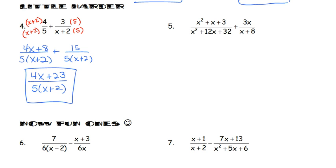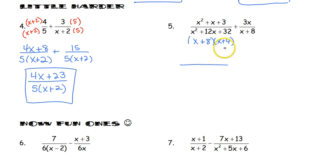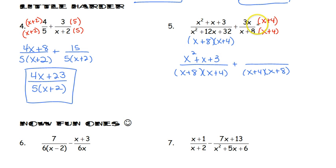For number 5, this one may look really hard, but keep the numerators and denominators factored. We want to factor the bottom of the second fraction to see if it shares a common factor with the first. Two numbers that multiply to 32 and add to 12 are 8 and 4, giving us (x plus 8)(x plus 4). The first denominator already has x plus 8, so it's only missing x plus 4. The common denominator is (x plus 8)(x plus 4), so we multiply the second piece by (x plus 4). 3x times x is 3x squared, and 3x times 4 gives us 12x.